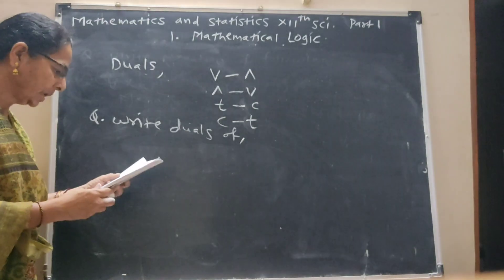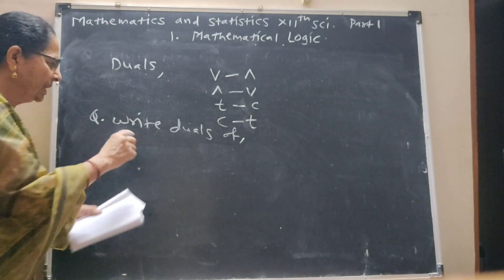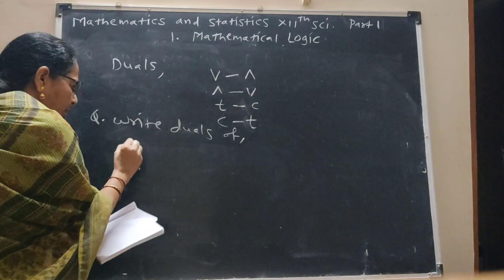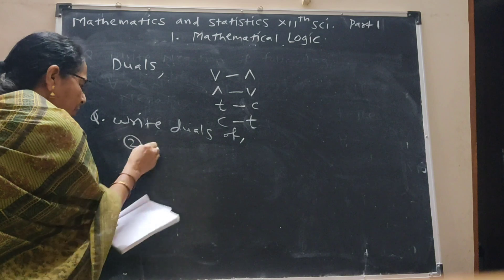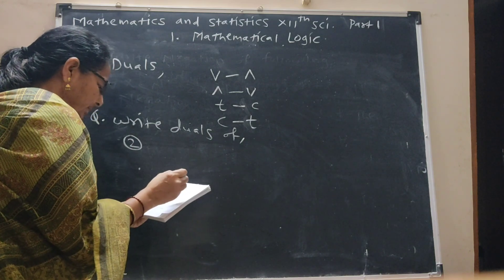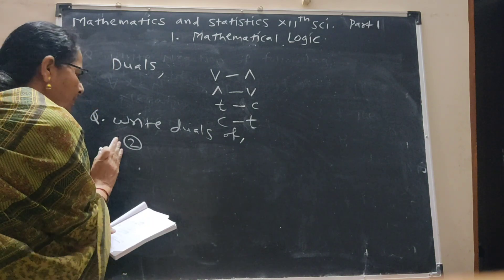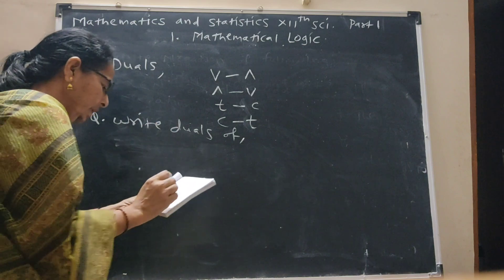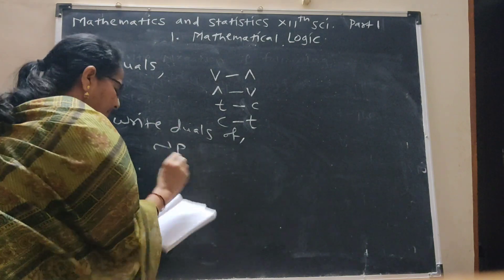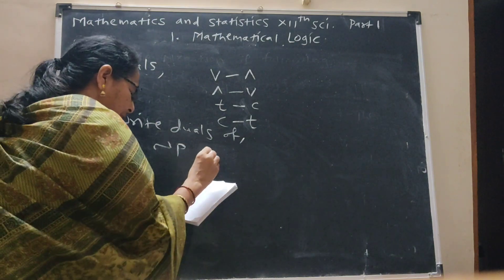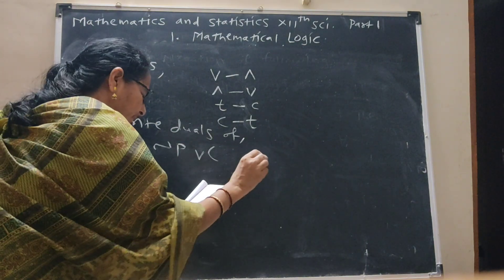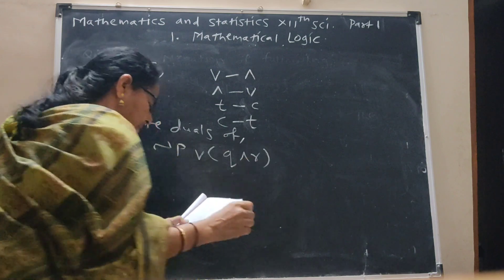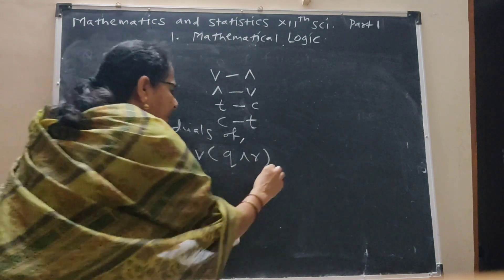Question, right ways of question is question number 2 here. Negation P or Q and R and T.